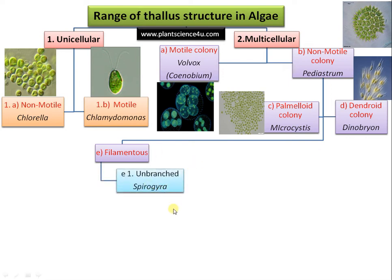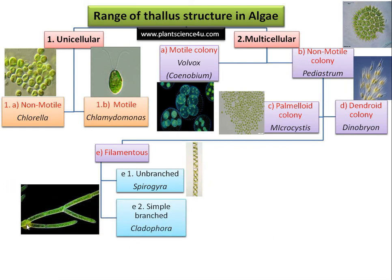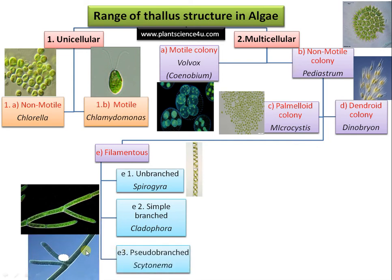There are unbranched filamentous algae like Spirogyra and Oedogonium. Spirogyra is a very common alga found in ponds, also called pond scum or pond silk — you can see the spiral chloroplast here. Then there is simple branched algae like Cladophora, with dichotomous branching that arises from just below the septa — you can see the dichotomy under the microscope.